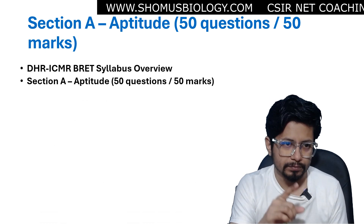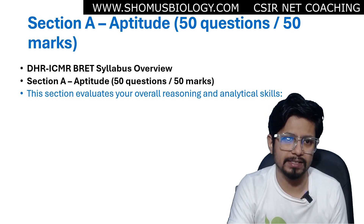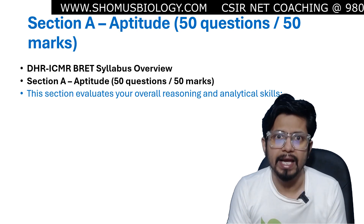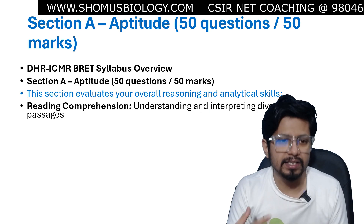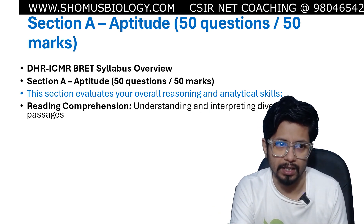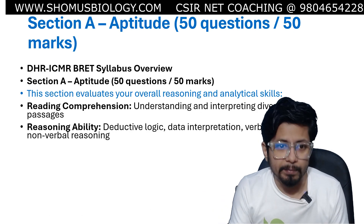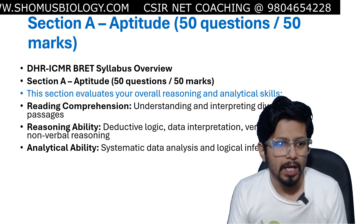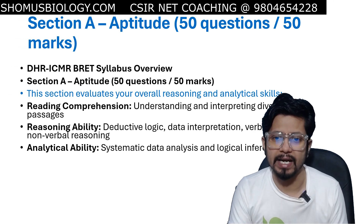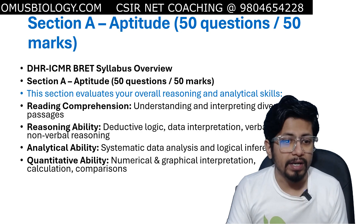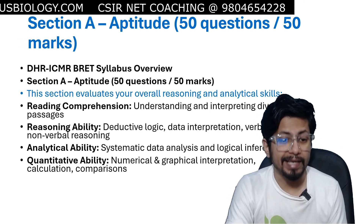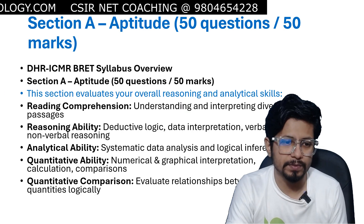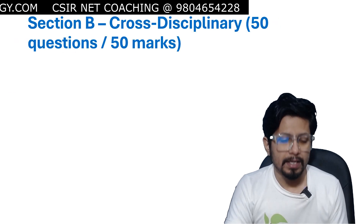The aptitude section has different questions that evaluate your overall reasoning and analytical skills. This includes reading comprehension — understanding and interpreting different passages. Reasoning ability covers deductive logic, data interpretation, and verbal and non-verbal reasoning. Analytical abilities are checked with systematic data analysis and logical inference. Quantitative ability includes numerical and graphical interpretations, calculations, comparisons, and evaluating relationships between quantities logically.